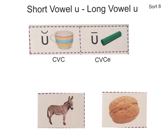First of all, we're going to start with our short U and the word 'cup.' We notice that 'cup' has a consonant plus a vowel plus a consonant. And short U makes the 'uh' sound.